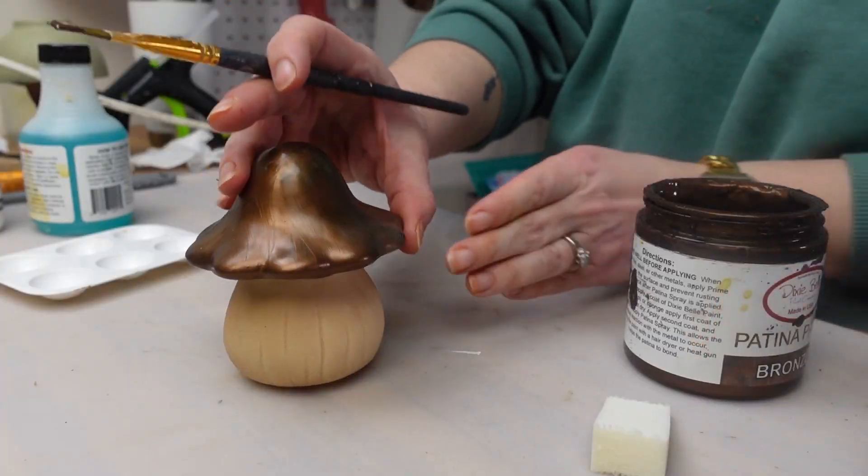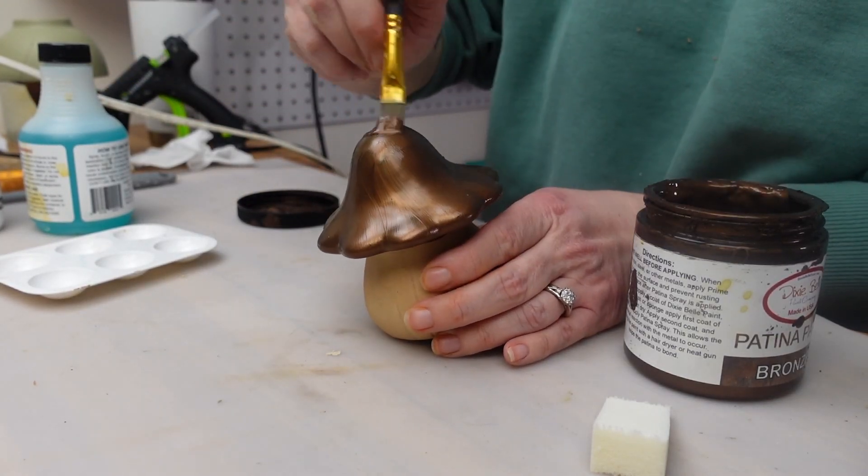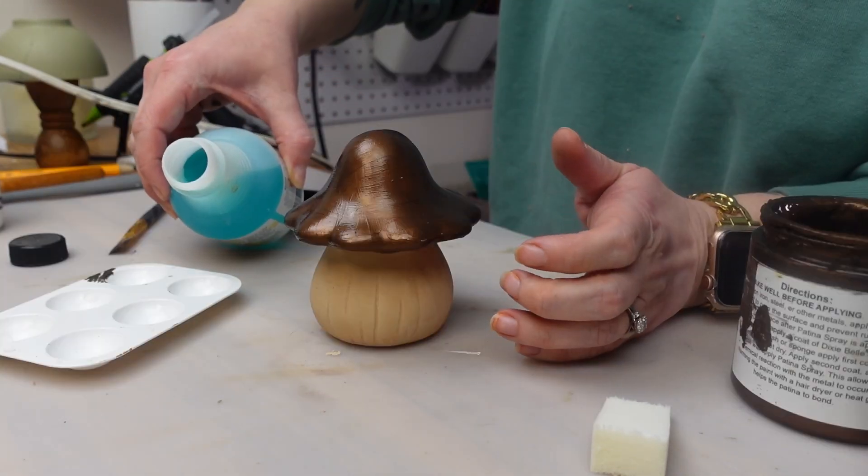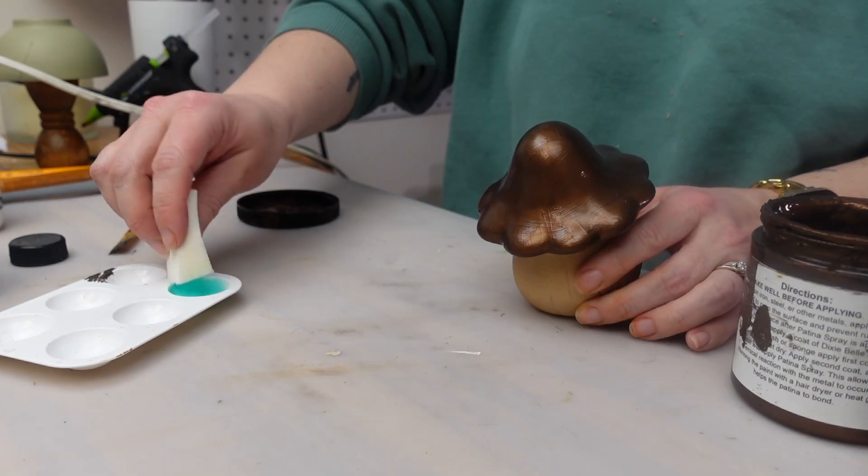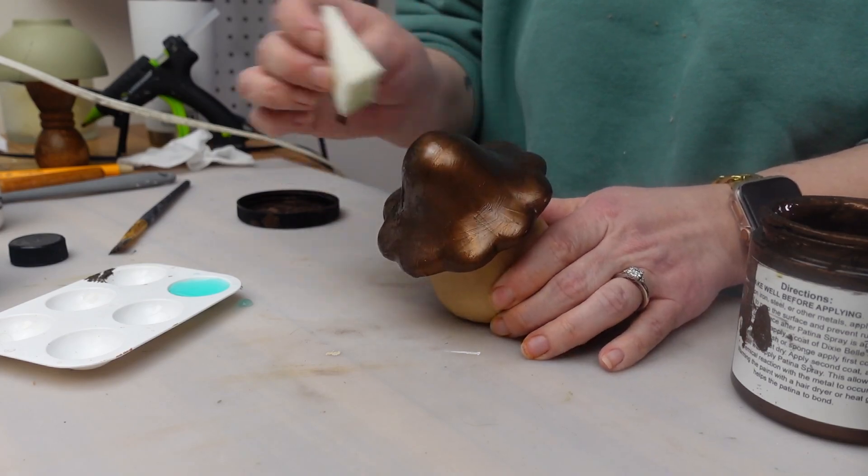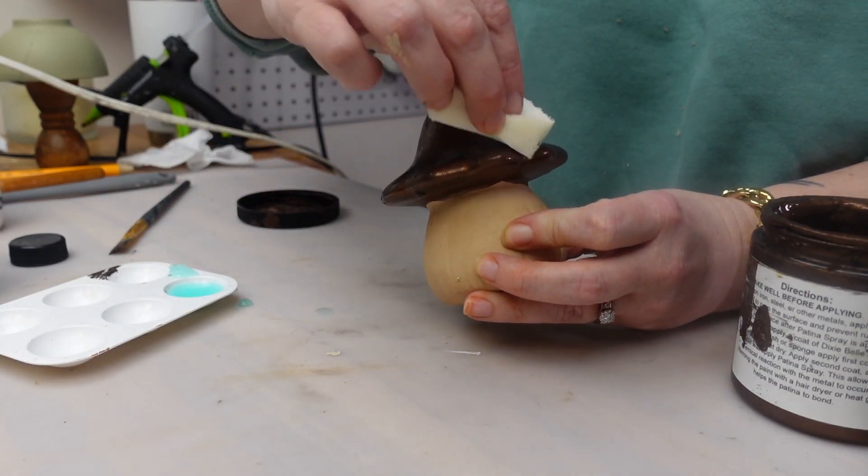Then you want to add a second coat and this time you add the patina spray while the bronze paint is still wet. I like to add it on with a sponge just because I don't like the way that it looks when the spray runs and drips, but if you like that look you can certainly spray it on as well. Then you just set it aside and let the patina do its job.